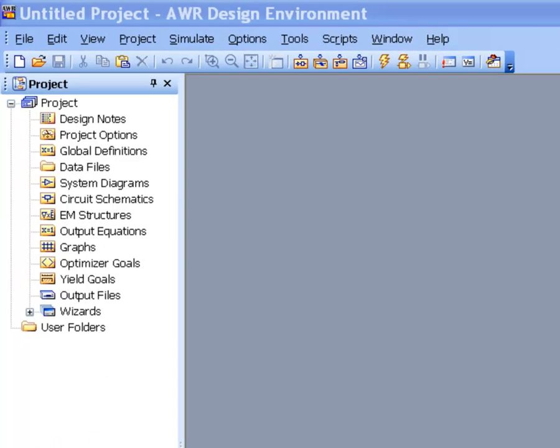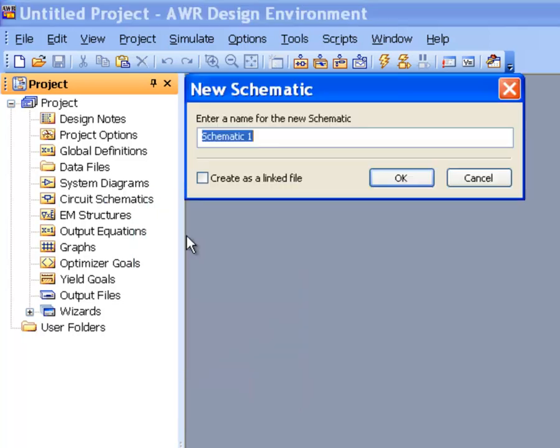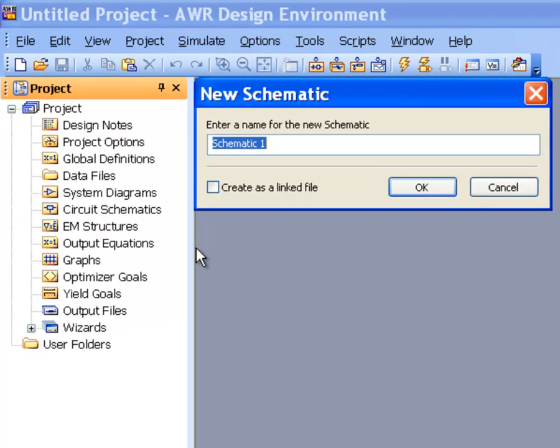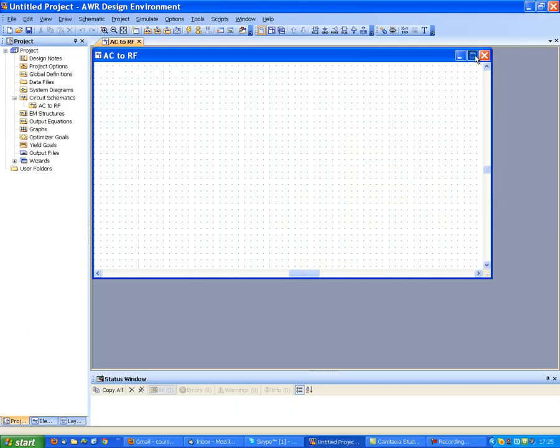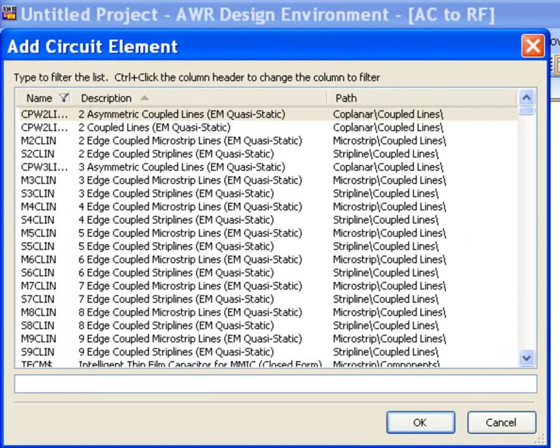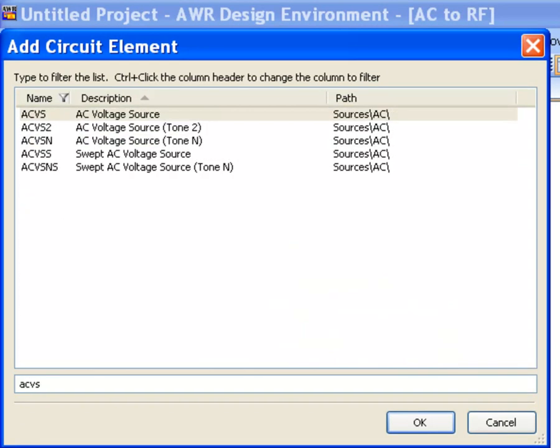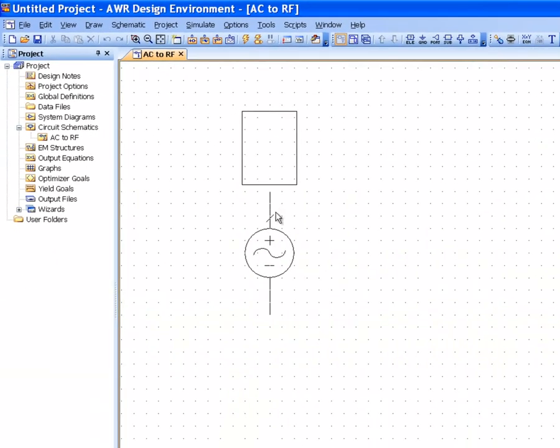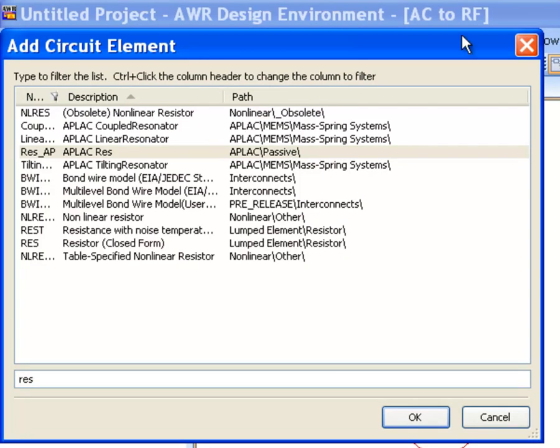Let's redraw the schematic quickly. Circuit schematic, new schematic, let us call it AC2RF. We will then use the usual Control L to fetch a voltage source and our resistors, so AC voltage source and place it on the schematic, get yourself a ground connector and then a couple of resistors in a similar fashion.